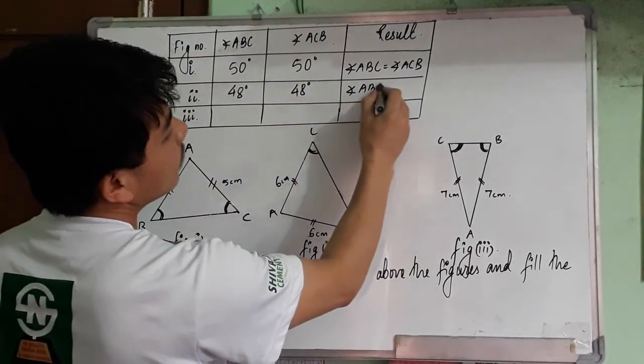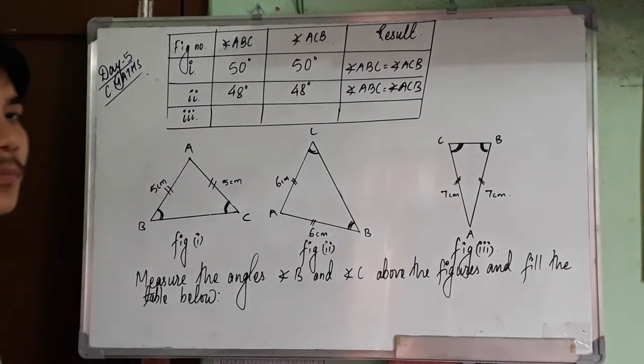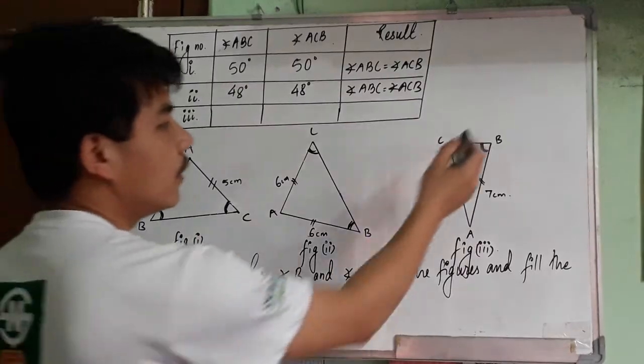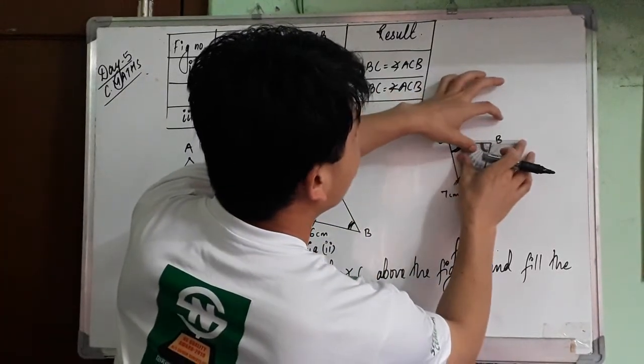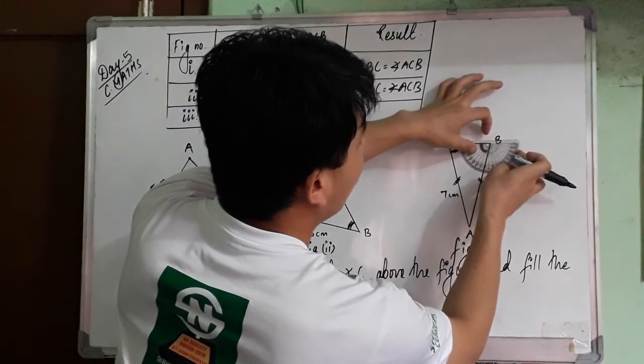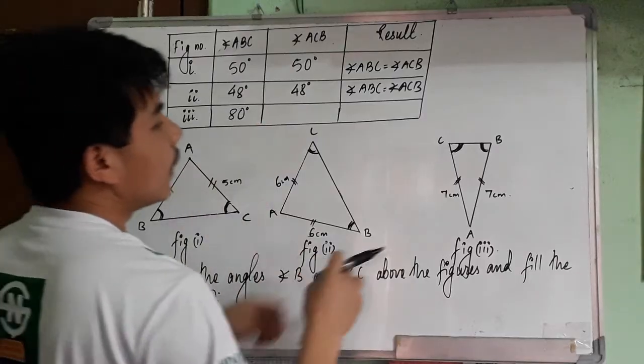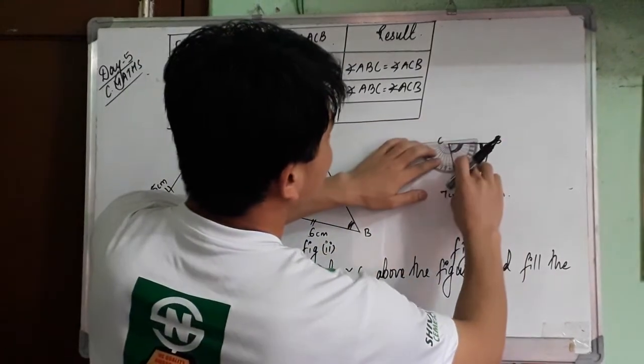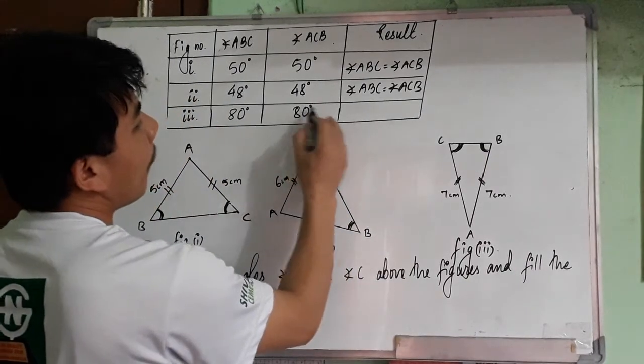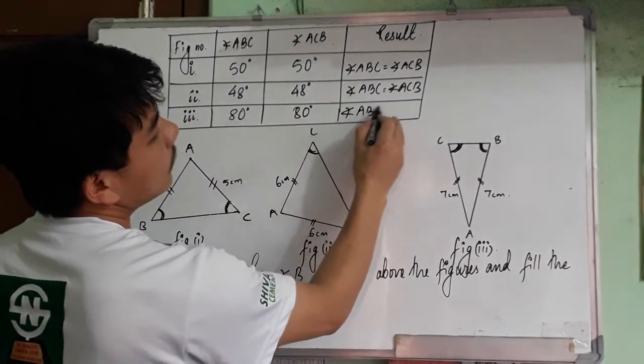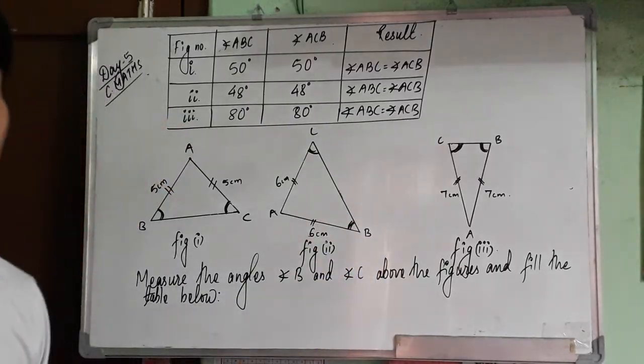In figure third, measure these two angles. Angle B is 80 degrees and angle C is also 80 degrees. Here also, ABC equals ACB. Both base angles are equal. This is the result.